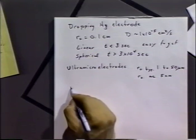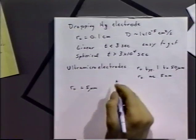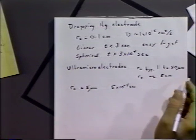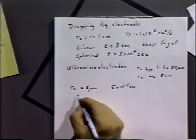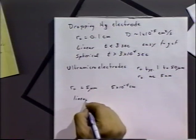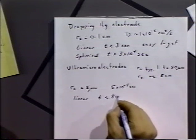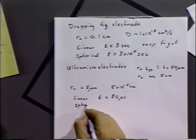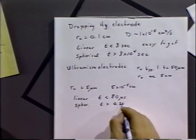Let's consider a typical R0 of 5 micrometers, and that would be 5 times 10 to the minus 4 centimeters. Using the equation D0·t over R0 squared, we see that linear diffusion would occur for times less than 80 microseconds, and spherical diffusion for times greater than about 0.25 seconds.